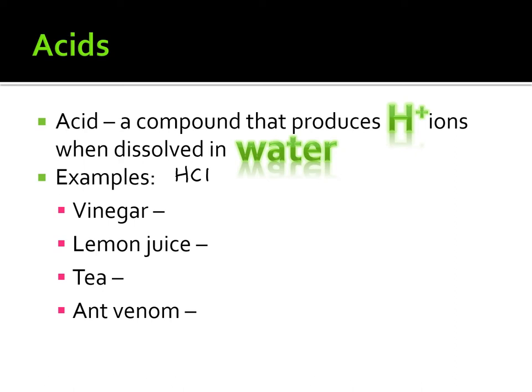What do we mean by an acid being a compound that produces hydrogen ions when dissolved in water? Well, water will come in and break this molecule apart into its building blocks. This hydrochloric acid, when it dissolves, will form hydrogen ions, H+, and chloride ions, Cl-.